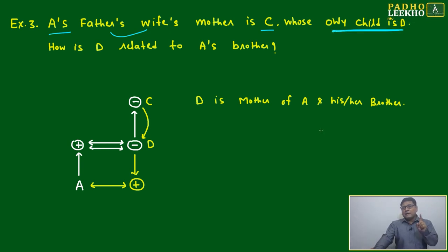Here, careful. Example one we have seen only daughter, but that was not sure, only one daughter. Here it's given only child D. How is D related to A's brother?